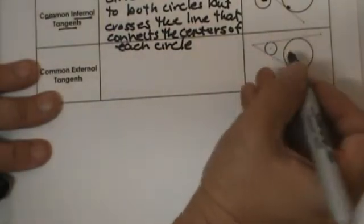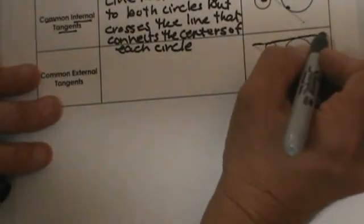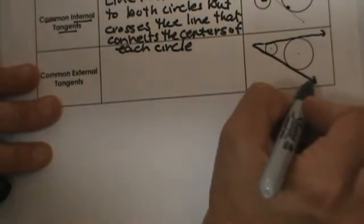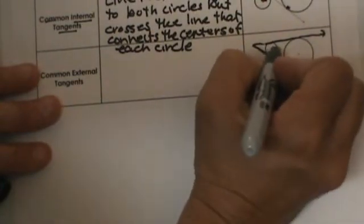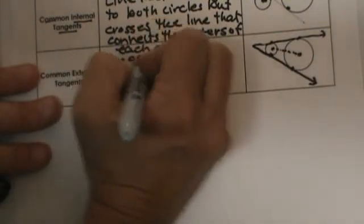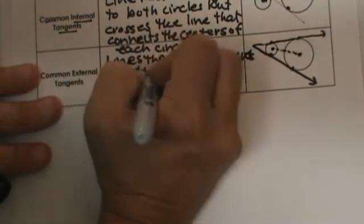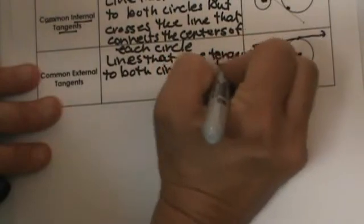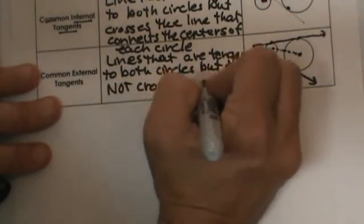Now how is a common external tangent different? We have two circles that are not tangent to each other — they don't touch. But you have an external tangent here and another external tangent here. Notice these two lines are tangent to both circles but they don't cross this imaginary line from center to center. So they are lines that are tangent to both circles but do not cross the imaginary center-to-center line.